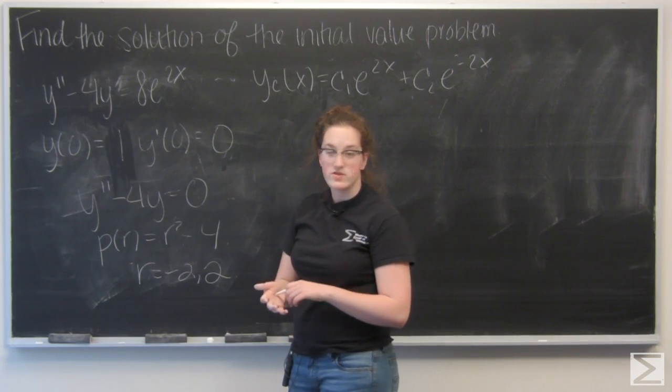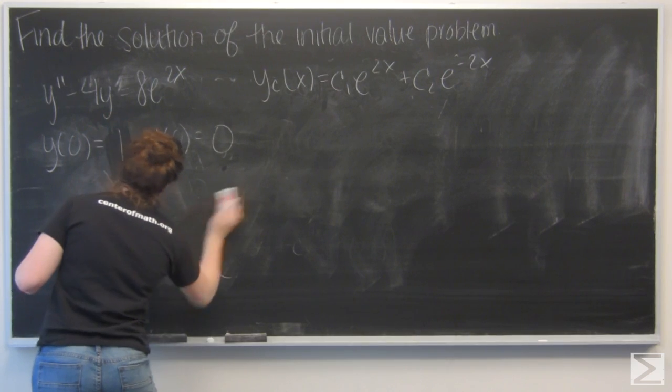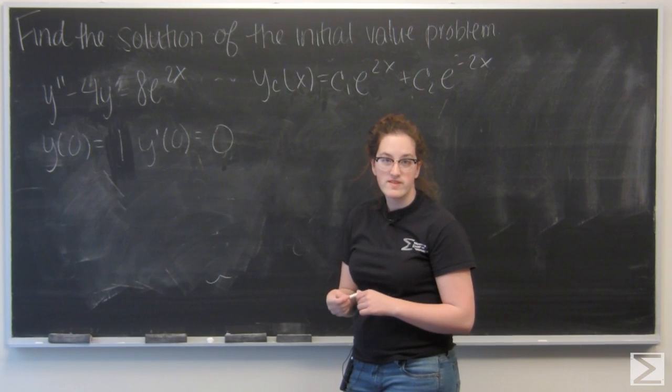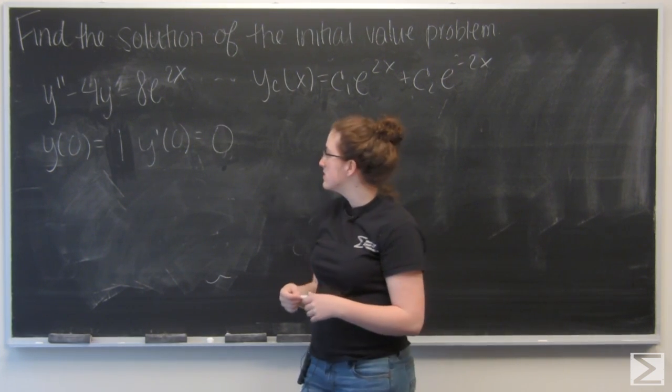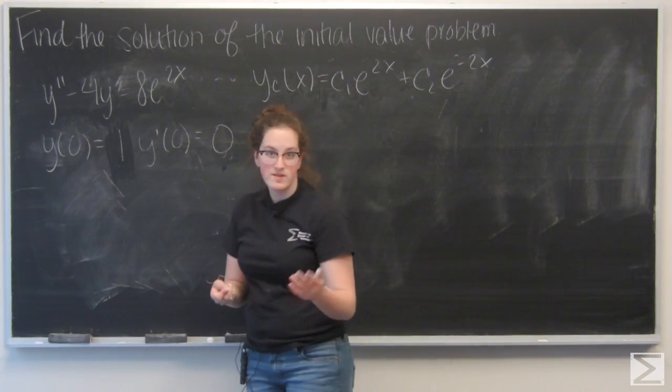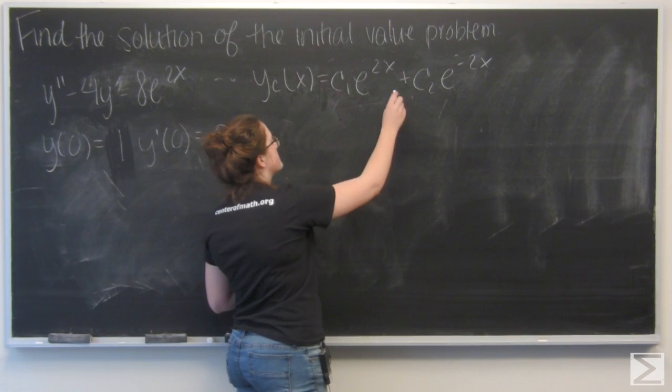Now I want to find a particular solution, and I can look at the forcing function to do that. The forcing function is 8e to the 2x. So I know that yp is going to be some constant times e to the 2x. But if I take a look at yc, I see e to the 2x here.